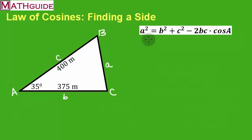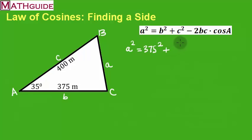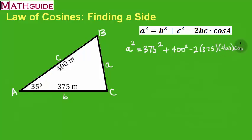Now that we've got the formula, we're going to plug in the information based on these letters. I've got A squared — I don't know what A is, so I'll just write A squared. Then B squared, which is 375 squared, and C squared, which is 400 squared. Then it's minus 2 times B, which is 375, times C, which is 400, times the cosine of angle A, which is 35 degrees.